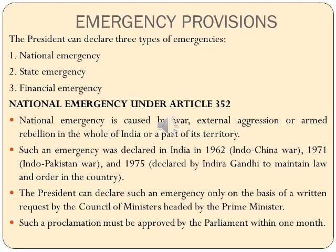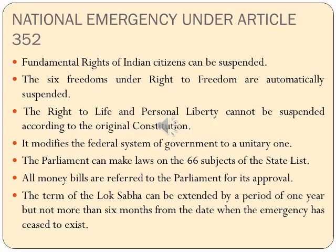It modifies the federal system of government to the unitary system. In January 1977, during the emergency declared by Indira Gandhi, the government decided to suspend the right to life and personal liberty by dispensing with the habeas corpus. Justice Hansraj Khanna defended the right to life and asked whether life as mentioned in Article 21 would also be covered by the government's argument.